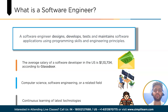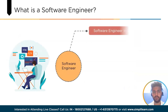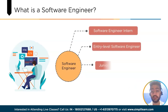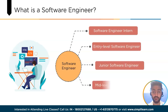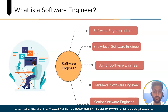As we've understood what a software engineer is, let's move forward and learn about the levels of software engineering. There are five levels of expertise, each with different responsibilities and expectations. These include software engineer intern, entry-level software engineer, junior software engineer, mid-level software engineer, and senior software engineer. Now let's understand each one of these in detail.